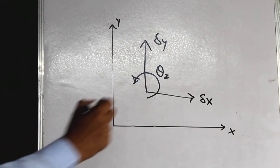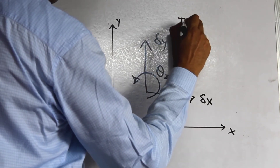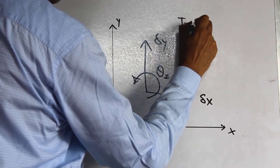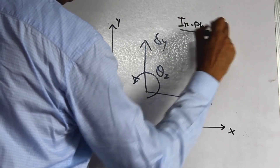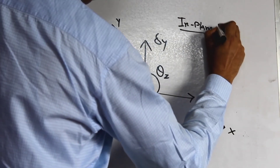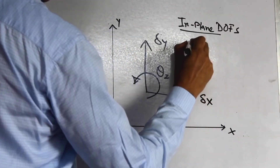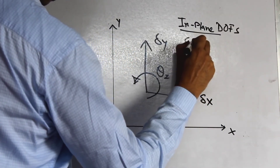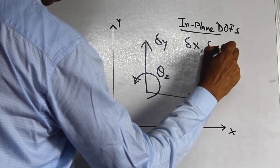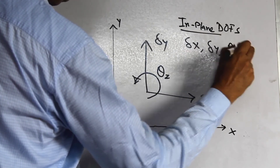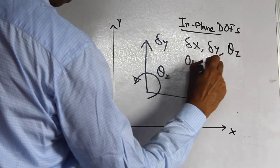So what are the in-plane degrees of freedom? The in-plane degrees of freedom are delta x, delta y, and theta z. And what are the out-of-plane degrees of freedom? The out-of-plane degrees of freedom are delta z, theta x, and theta y.